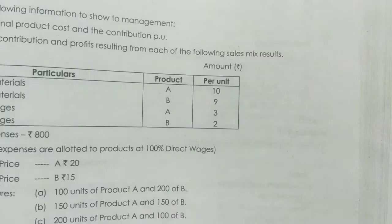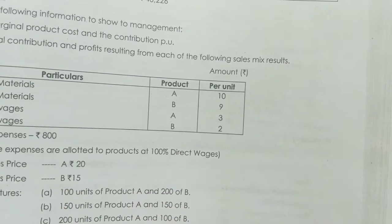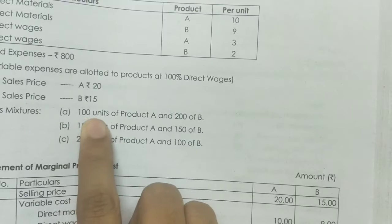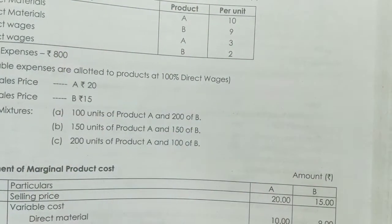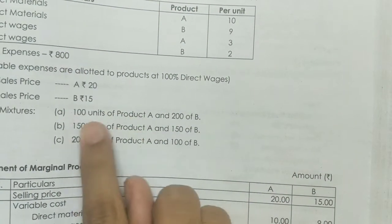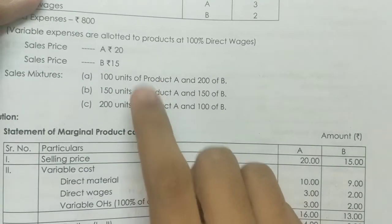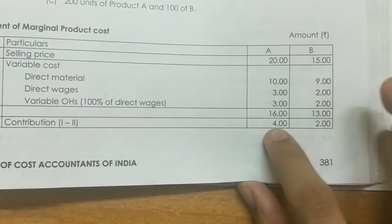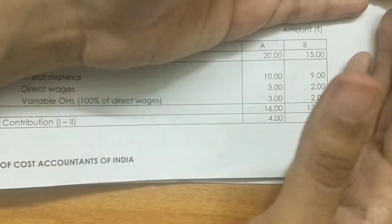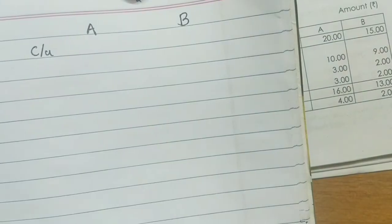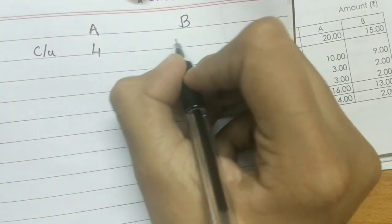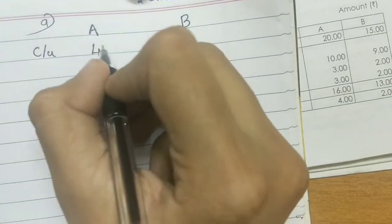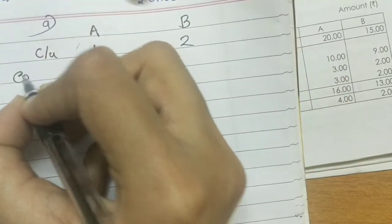The contribution per unit is the selling price minus the marginal cost. The total contribution per unit gives us the profit. The first product has 100 units. This is the contribution per unit, and we also have the company's contribution per unit.